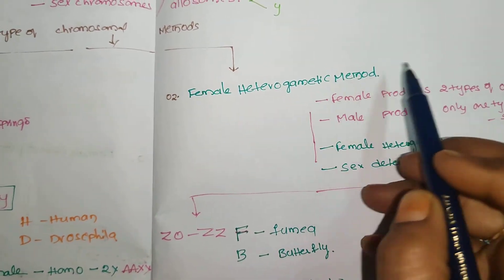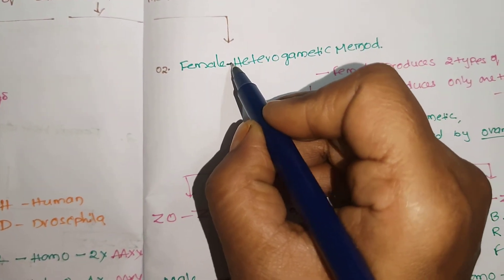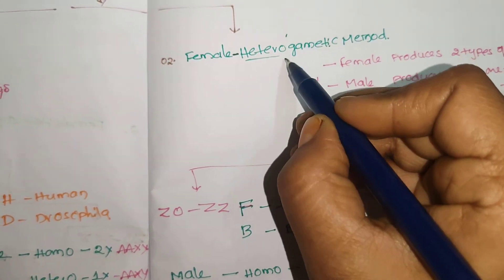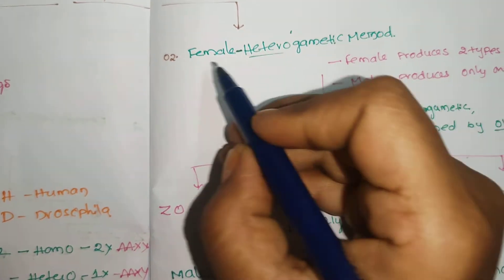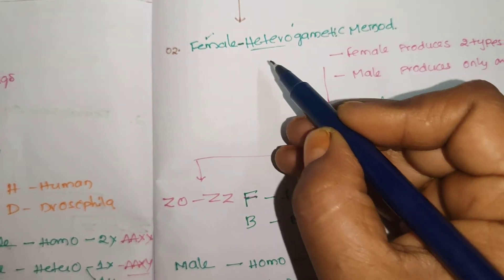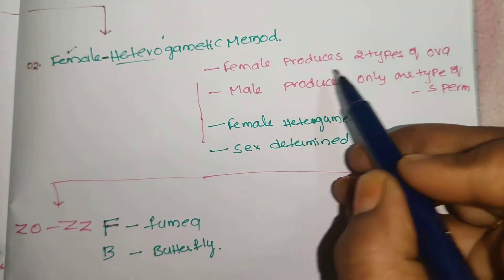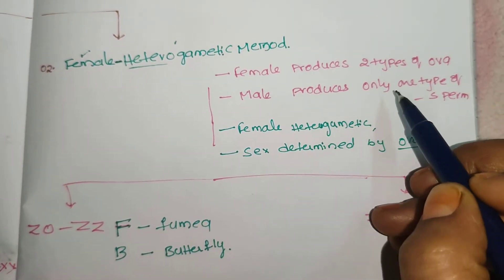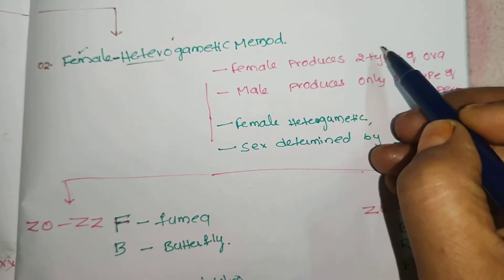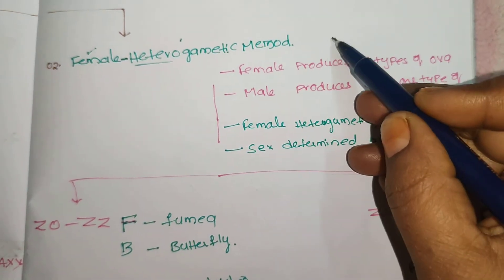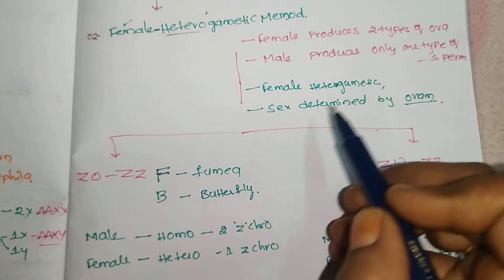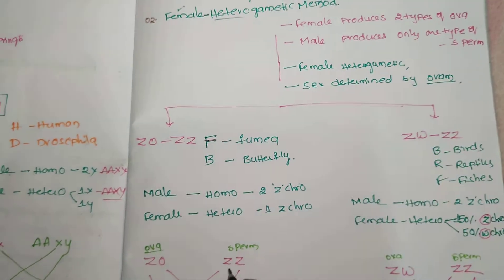In female heterogametic, the name itself indicates that the female has the heterogametic condition — two dissimilar and different gametes are produced by the female. Therefore, the female is responsible for determining the sex of the offspring. The female produces two types of ova, while the male produces only one type of sperm — that is why the male is homogametic and the female is heterogametic. So females determine the sex.